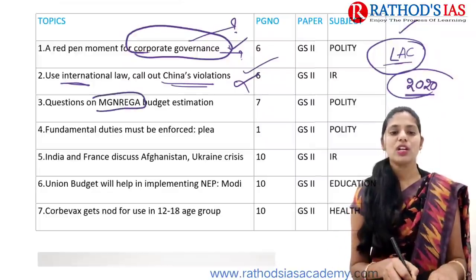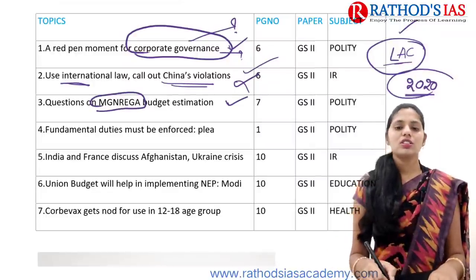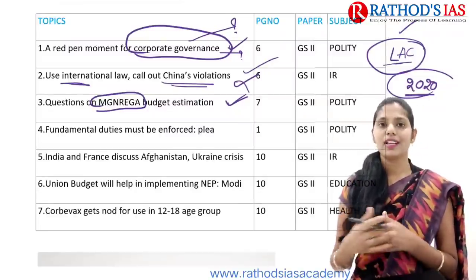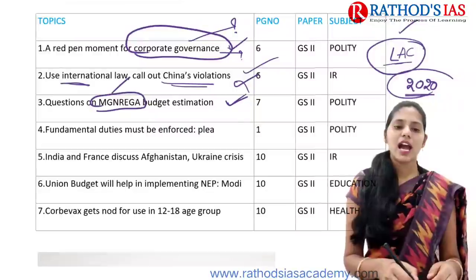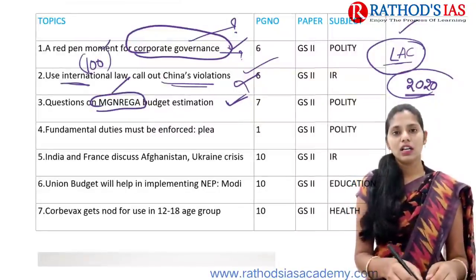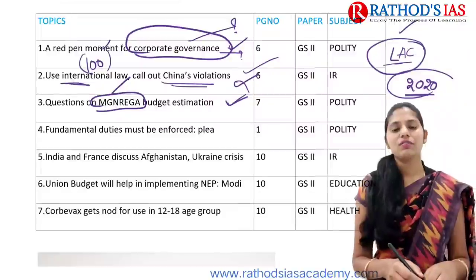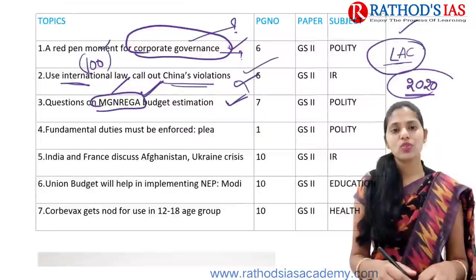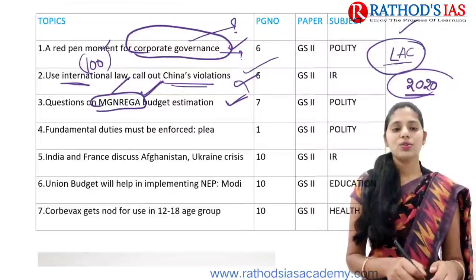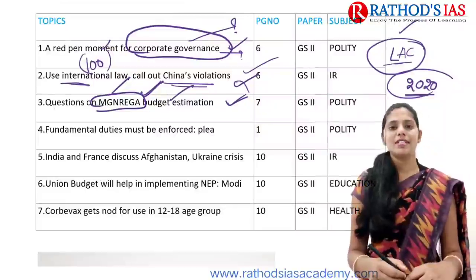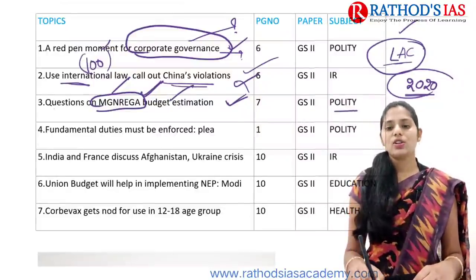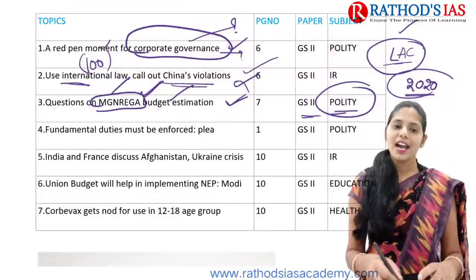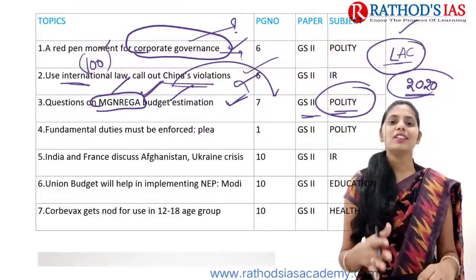The next topic is about questions on MGNREGA budget estimation. MGNREGA stands for Mahatma Gandhi National Rural Employment Guarantee Act. This act mainly says that 100 days of compulsory guarantee employment is given for rural areas. What happened recently is that in this budget, the allocation for MGNREGA had been decreased. This topic is once again important from our UPSC point of view, coming in GS Paper 2, and we can connect it with economy and government schemes in GS Paper 3 as well.